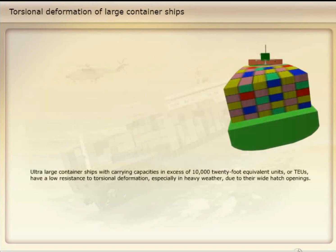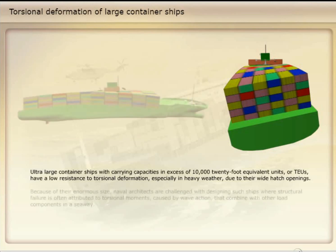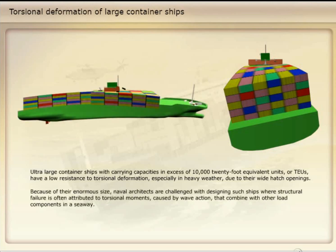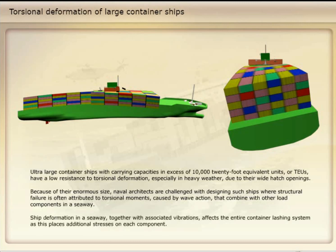Ultra-large container ships with carrying capacities in excess of 10,000 twenty-foot equivalent units (TEUs) have a low resistance to torsional deformation, especially in heavy weather, due to their wide hatch openings. Naval architects are challenged with designing such ships where structural failure is often attributed to torsional moments caused by wave action that combine with other load components in a seaway. Ship deformation in a seaway, together with associated vibrations, affects the entire container lashing system, placing additional stresses on each component.